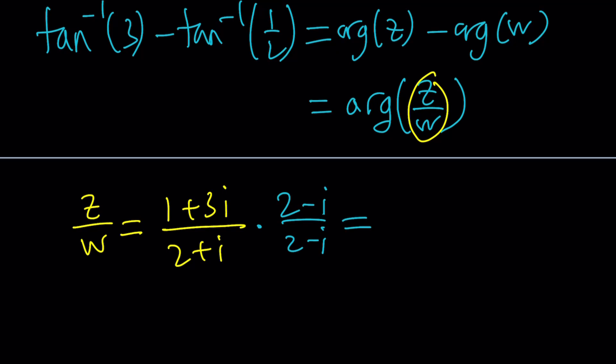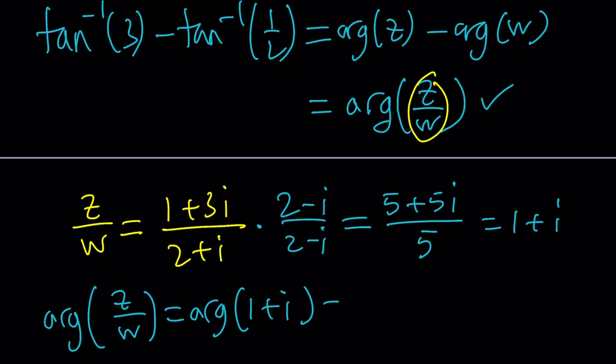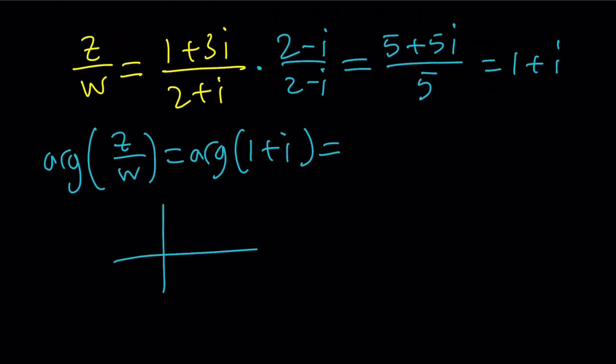2 plus 3 is going to be 5. And then 6i minus i is going to be 5i plus positive. At the bottom, it's going to be sum of two squares. Remember, when we multiply conjugates, it's going to be 5. And this is 1 plus i. Awesome. And what am I looking at? Argument of z over w. So argument of z over w is the argument of 1 plus i because that's what it is. And 1 plus i is just 1 comma 1. Come on. You know this. It's pi over 4, right?